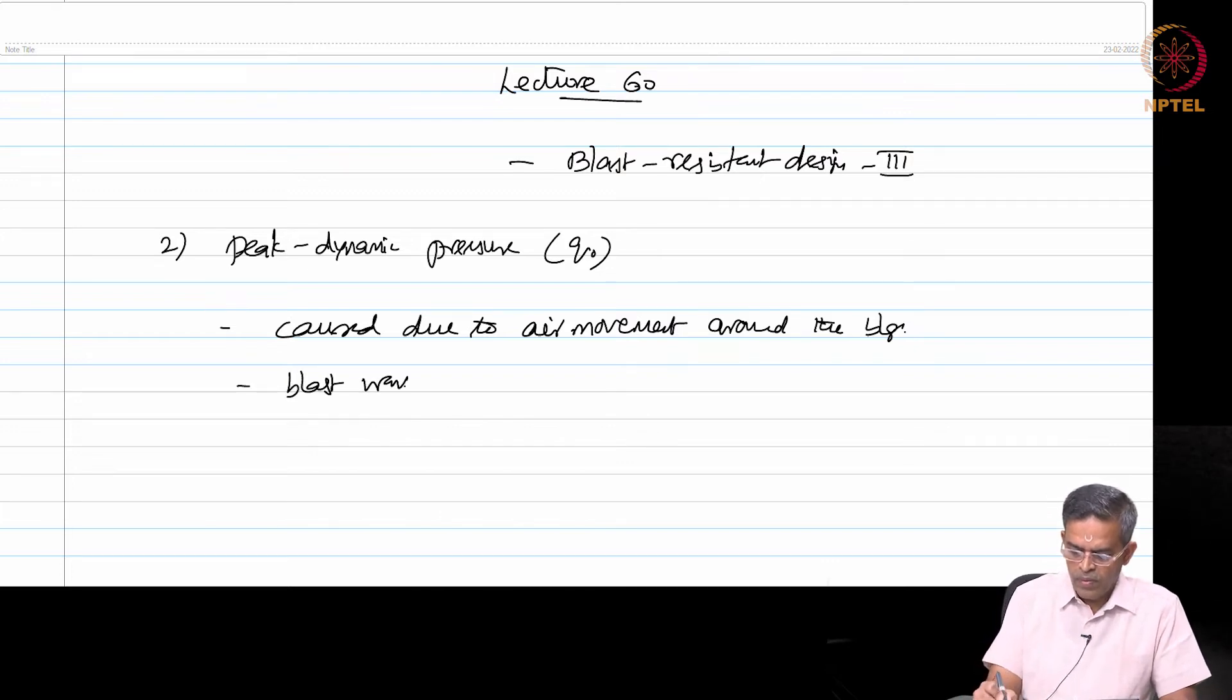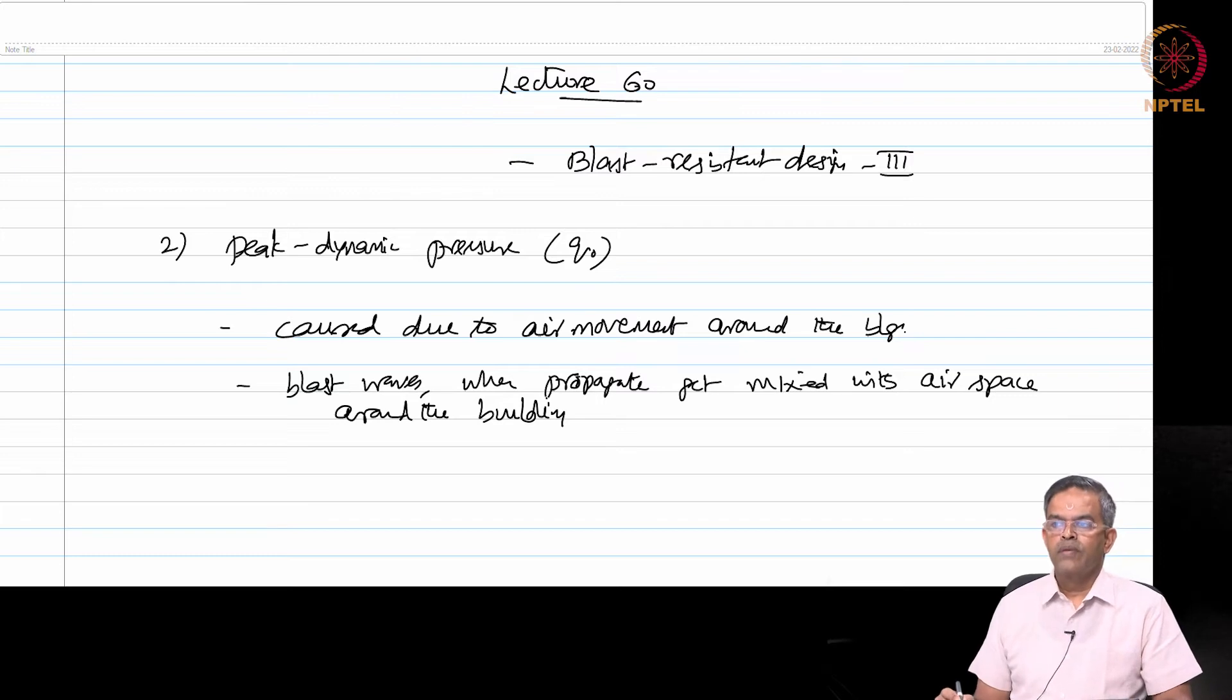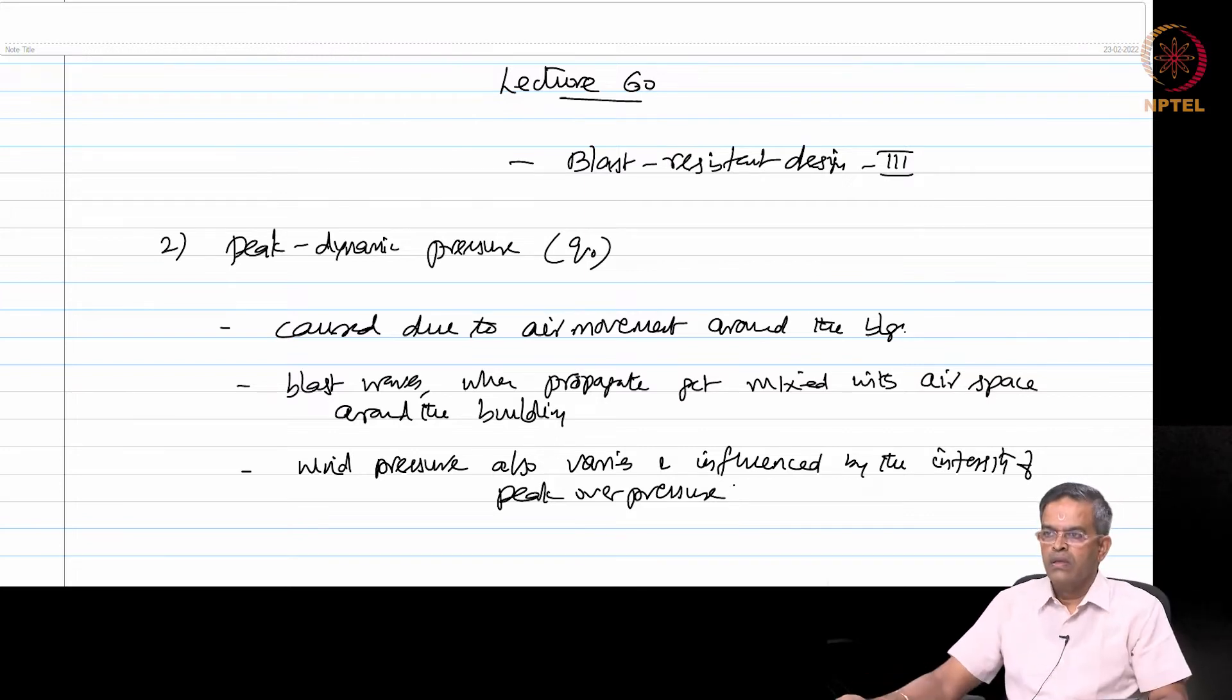Blast waves, when propagate, get mixed with airspace around the building, and that is resulting in peak dynamic pressure. Wind pressure also varies and is influenced by the intensity of peak overpressure in case of low overpressure range with normal atmospheric conditions.